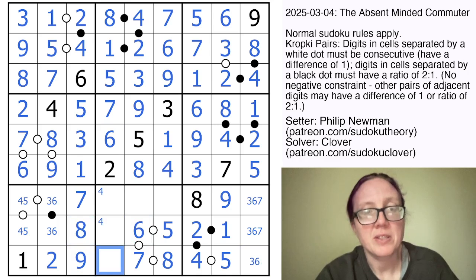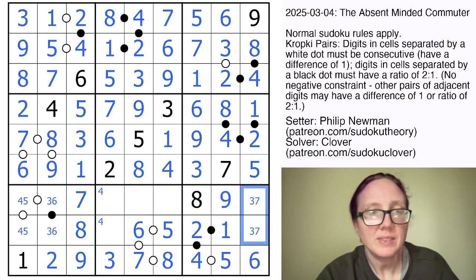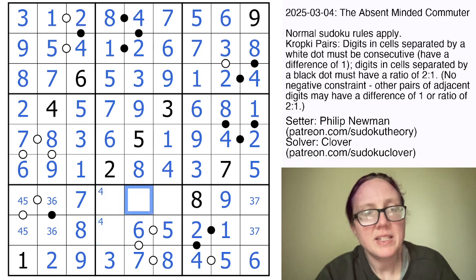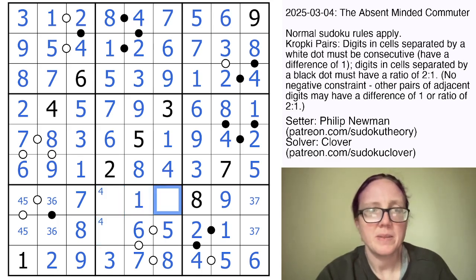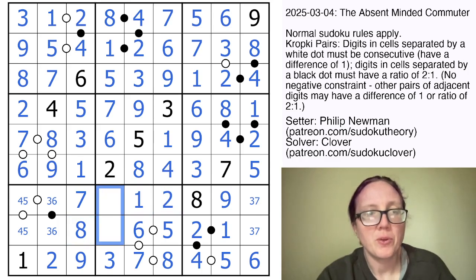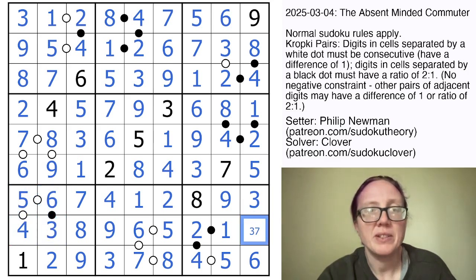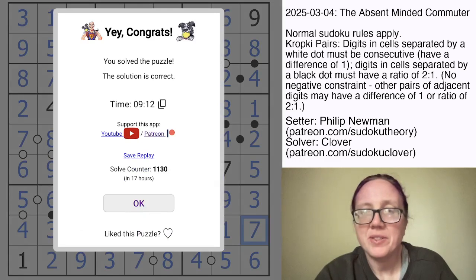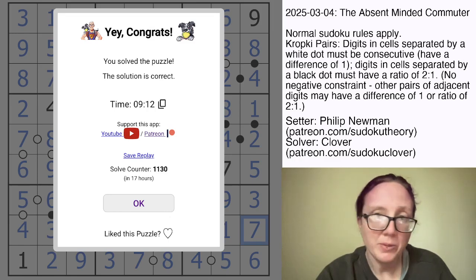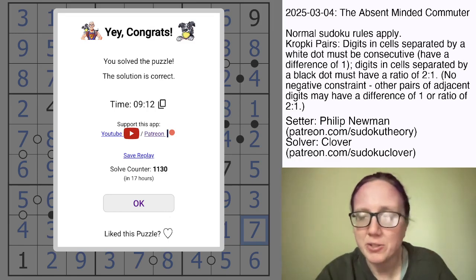This can only be a 3 or a 6, and there's a 6 in the column. That has to be a 1. This has to be a 2. These digits are going to be 4 and 9. And that's now a 5, a 6, a 3, a 4, and a 3, and a 7. And that is how you solve Philip Newman's lovely The Absent-Minded Commuter. I hope you guys enjoyed that one. The link to check it out yourself is in the description below this video. And I'll see you again in three days.